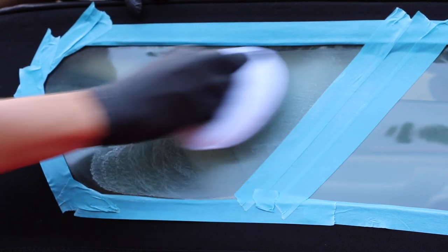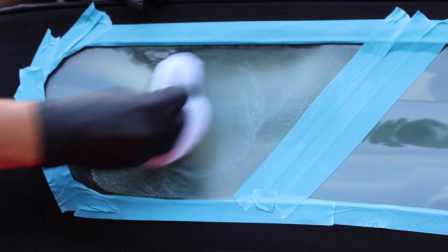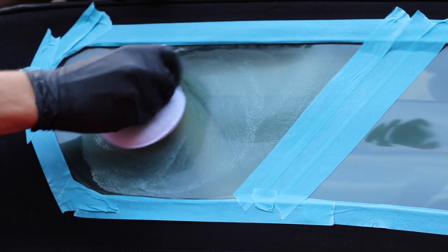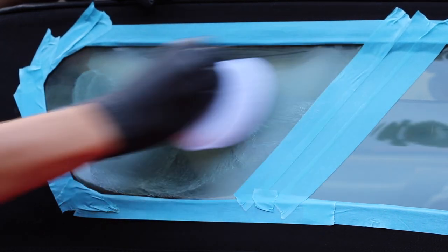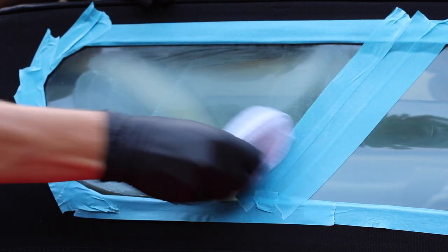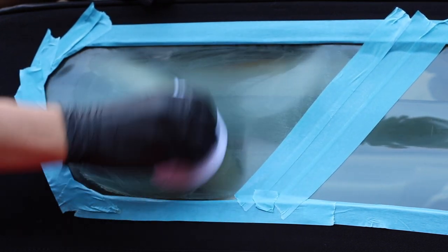After this, I took a microfiber applicator pad, clean and fresh, brand new ready for application, and put three pea-sized dots of the Plastic RX onto the microfiber pad, butterflied it so it was evenly spread, and then began to work it into the rear window.